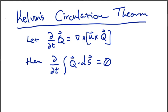To understand the Kelvin Circulation Theorem, we're going to consider it in the general case for some general vector q. q could be, for example, vorticity or magnetic field in MHD.